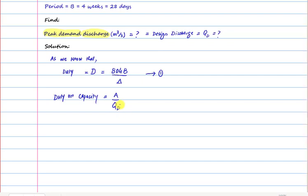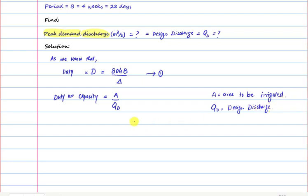Here, A is the area to be irrigated and Q_D is the design discharge or design capacity. To find Q design, we need to know A, Delta, and B. We already have the values of Delta and B, but we do not yet have the value of area to be irrigated.